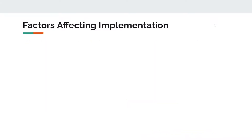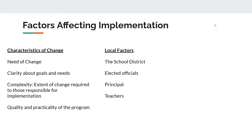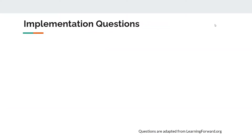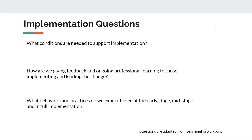When planning for implementation of the change initiative, a similar holistic approach is taken. First, we look at the characteristics of the change itself — three areas of concern are the practicality, complexity, and need for the change. Next, we look at local factors such as the school district and individual teachers. Lastly, we look at external factors that may impact the change initiative such as government oversight agencies and applicable federal laws. Some questions to consider in the implementation phase: What conditions are needed to support the implementation? How are we giving feedback and ongoing professional learning to those implementing and leading the change? What behaviors and practices do we expect to see at the early stage, mid-stage, and in full implementation?